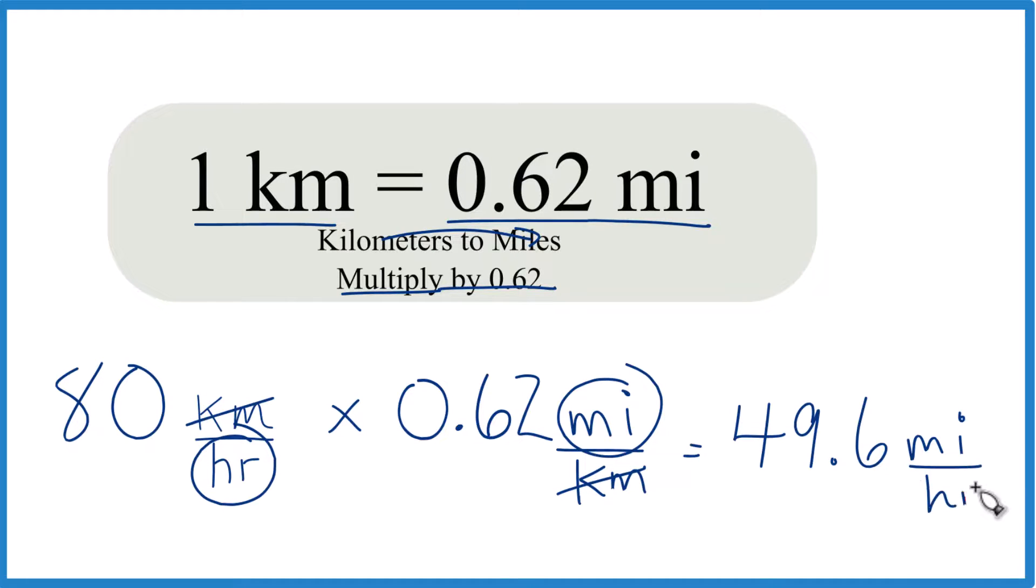So 80 kilometers per hour equals 49.6 miles per hour, or MPH. This is Dr. B, thanks for watching.